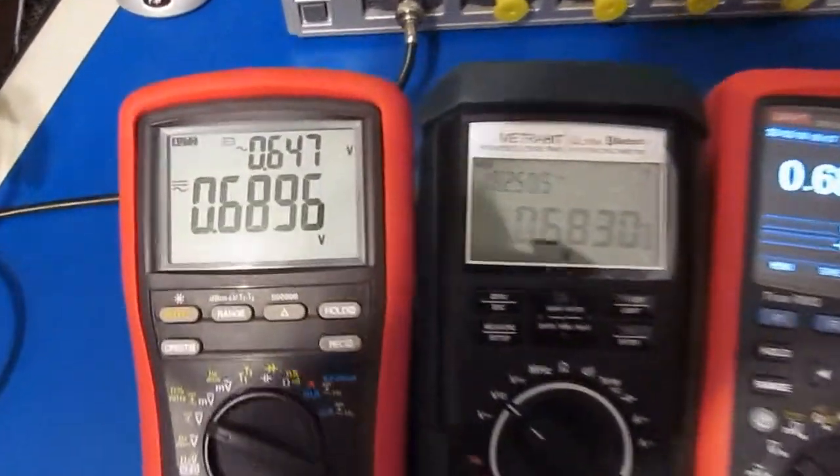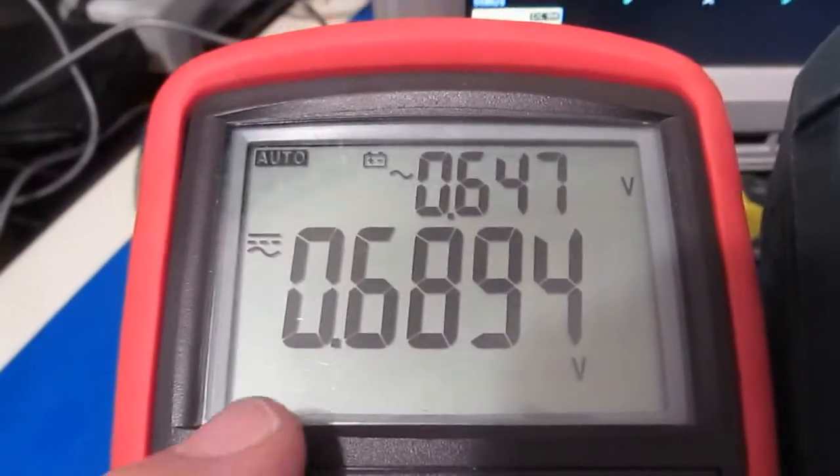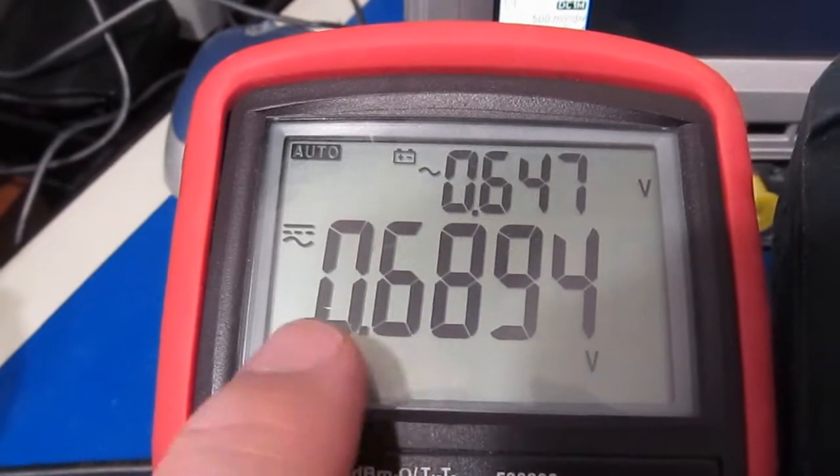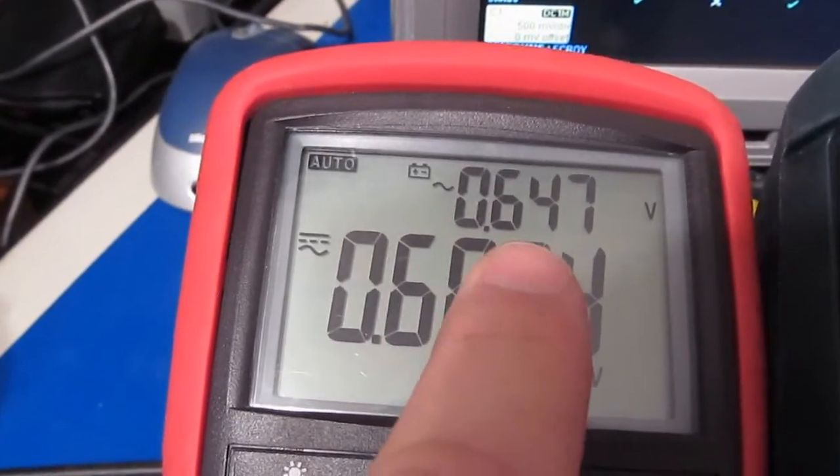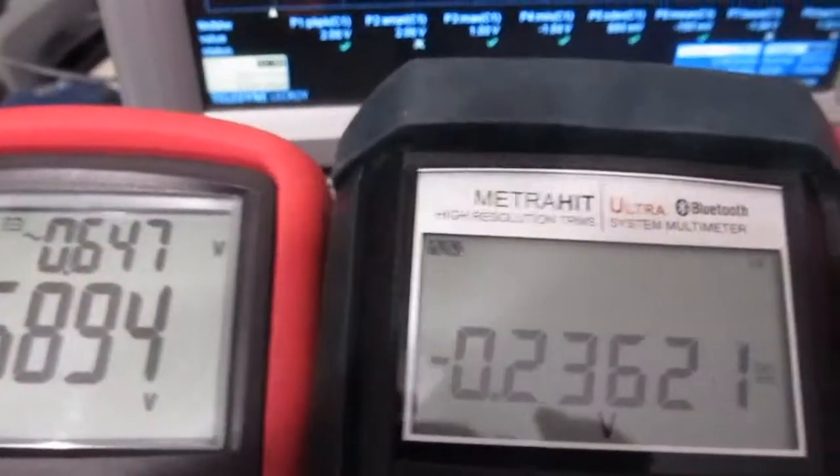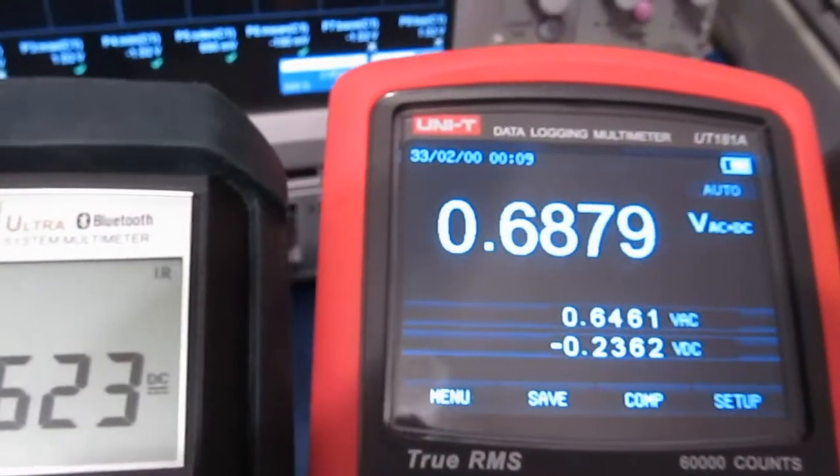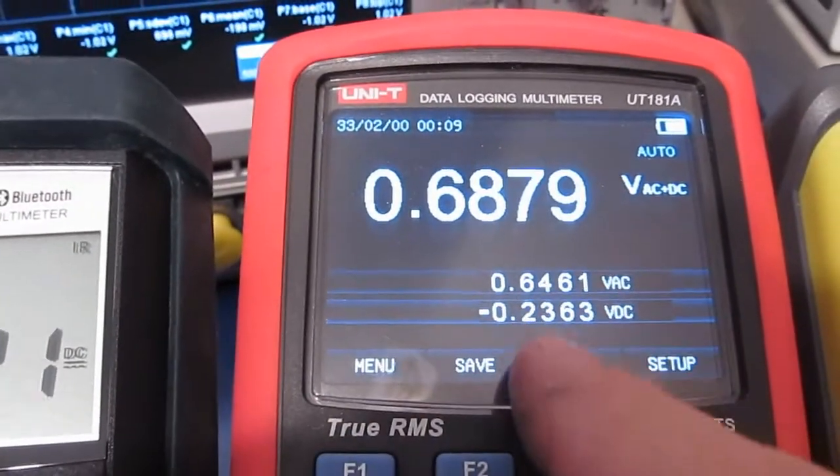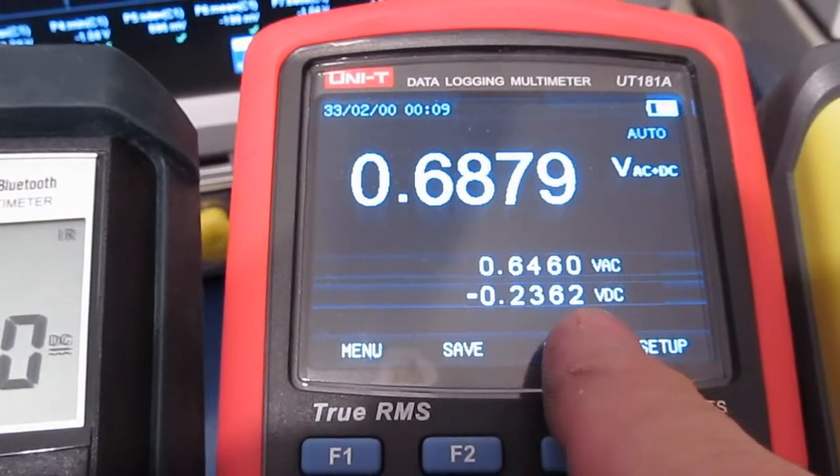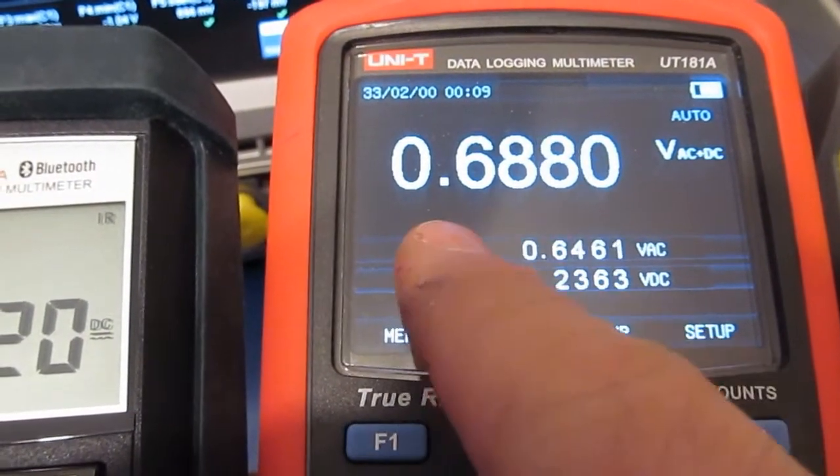Looking at the Breiman, this is the AC plus DC value and this is your AC value here. We look at the Unity UT 181, so here's your DC value, your AC value, and your AC plus DC.